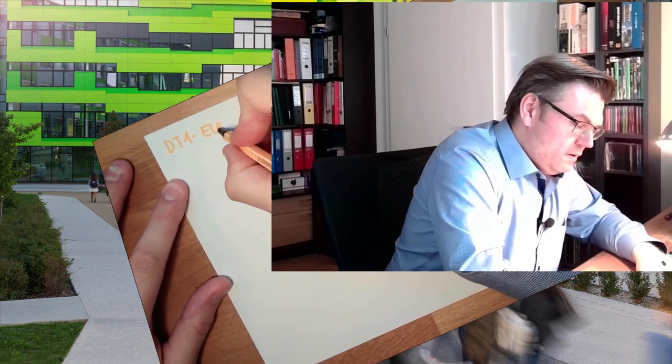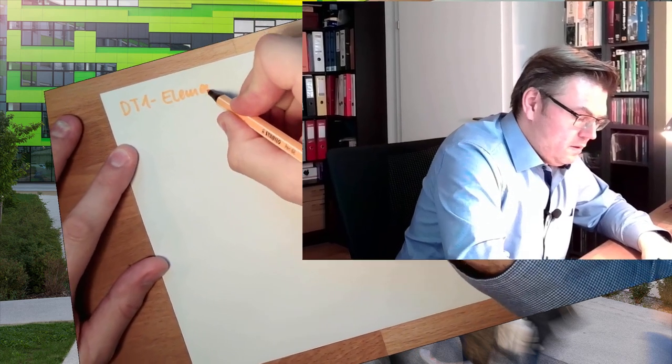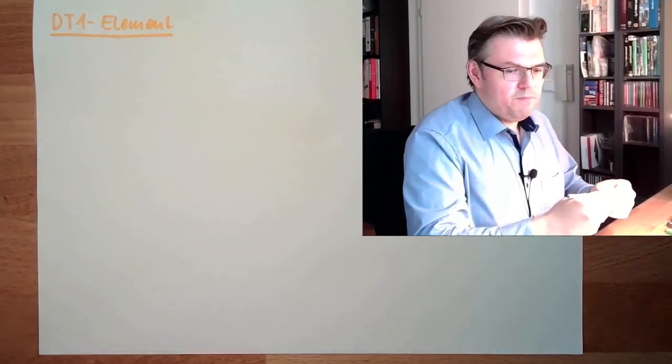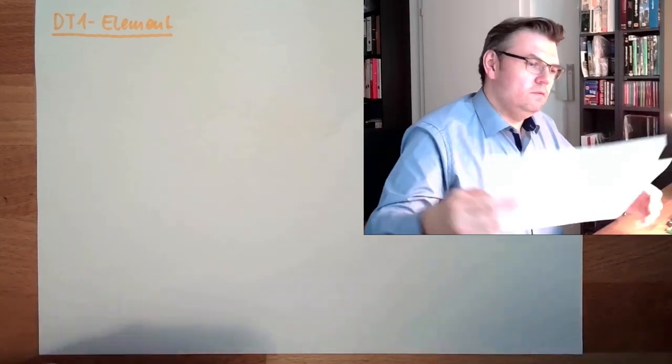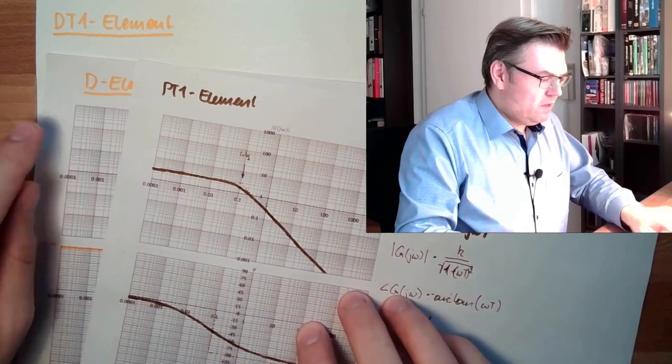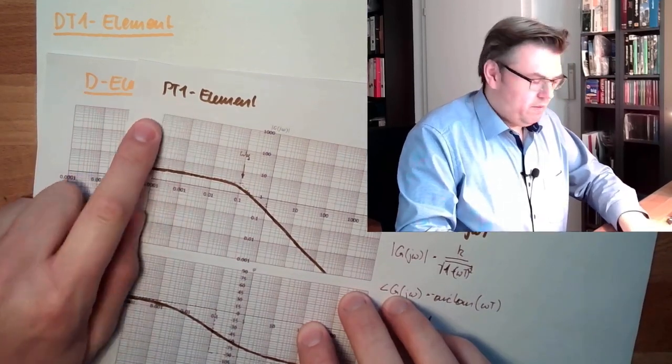We are combining a D and a PT1 element, and the result is a so-called DT1 element. We are simply combining those two: there is the D element, there is the PT1 element, and the result is the DT1 element.